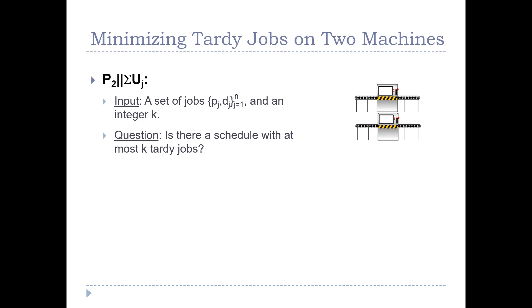Consider the following scheduling problem denoted P2|sigma|Uj in standard scheduling notation. We are given a set of n jobs where each job has an integer processing time pj and an integer due date dj, along with an additional global integer k. We want to determine whether we can schedule all jobs on two parallel identical machines where at most k jobs are tardy, meaning at most k jobs do not meet their due date. A schedule is simply a partition of the jobs into the two machines m1 and m2.